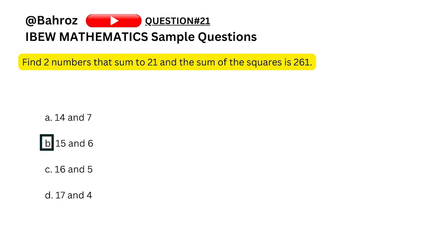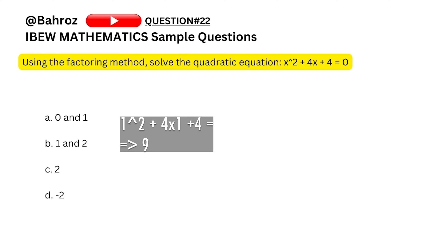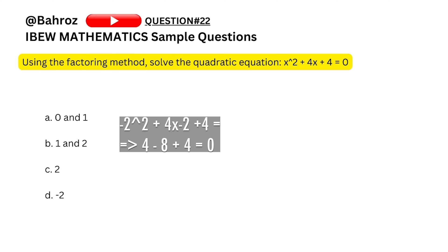This can take slightly longer if you go one by one, but once you solve one you get an idea of where your answer should lie. Question twenty-two: using the factoring method, solve x squared plus 4x plus 4. Trying positive values gives results greater than zero, so the answer must be negative. Trying x equals minus 2: minus 2 squared is 4, minus 2 times 4 is minus 8, so 4 minus 8 plus 4 equals 0. That is our answer.